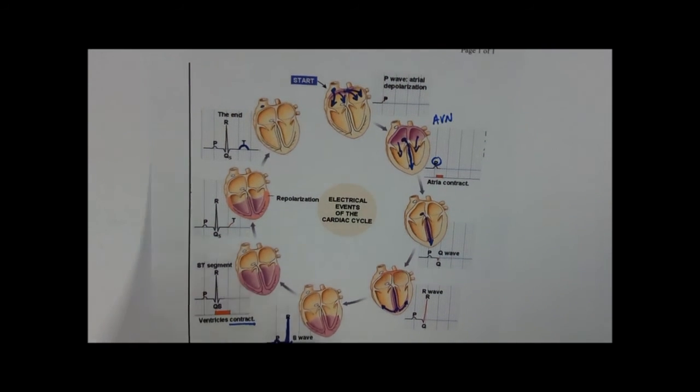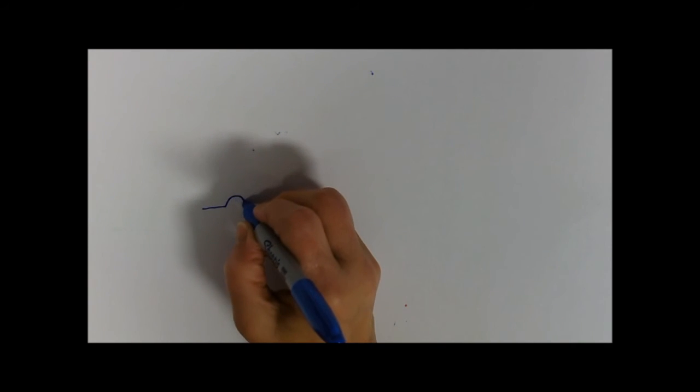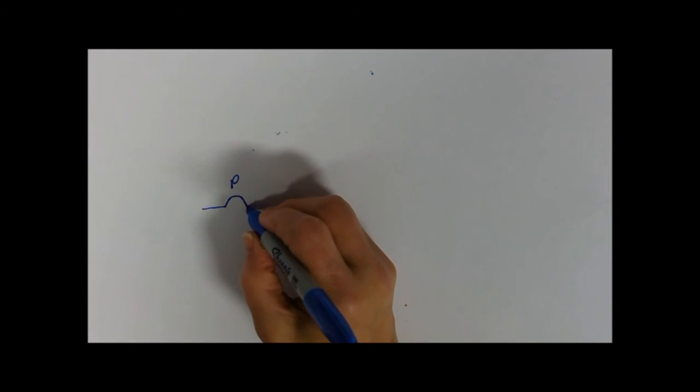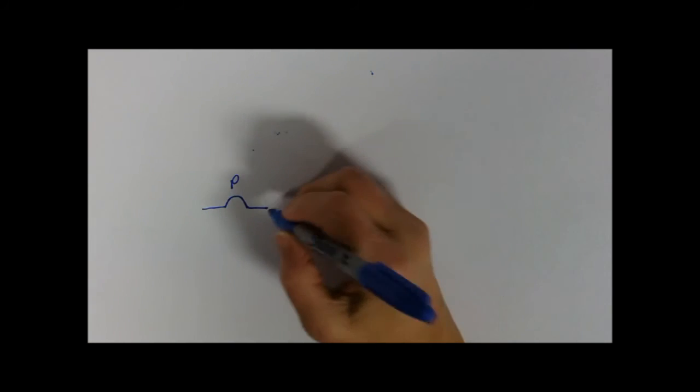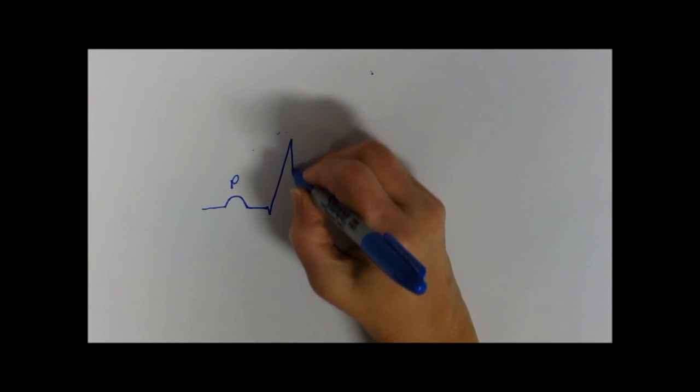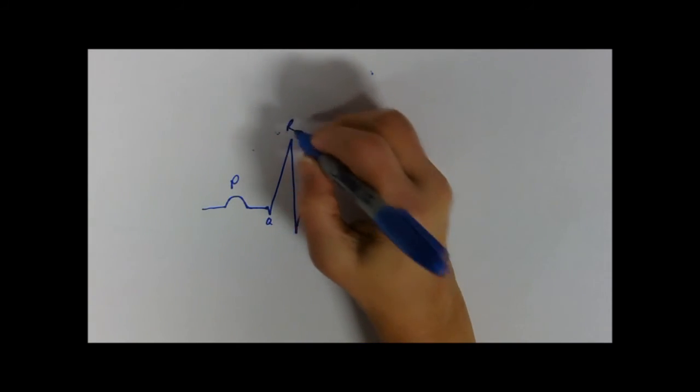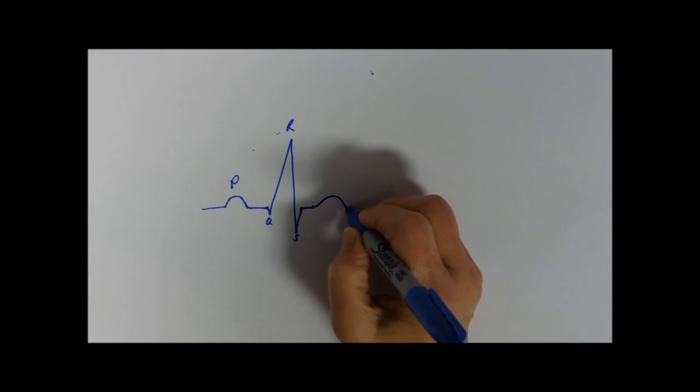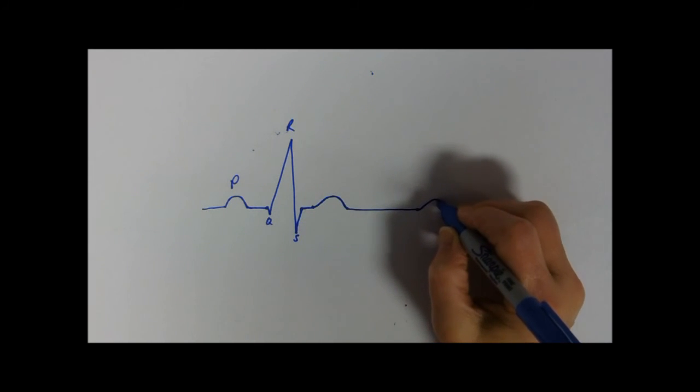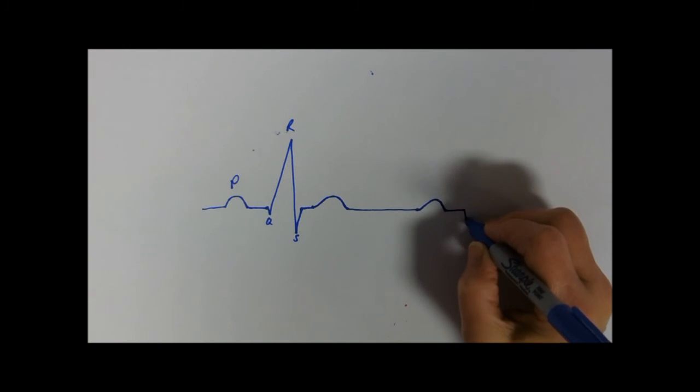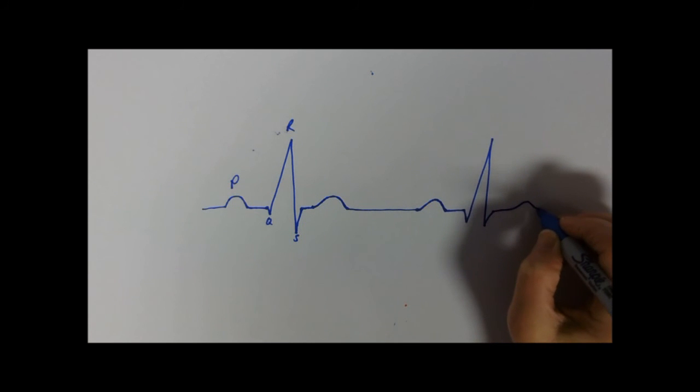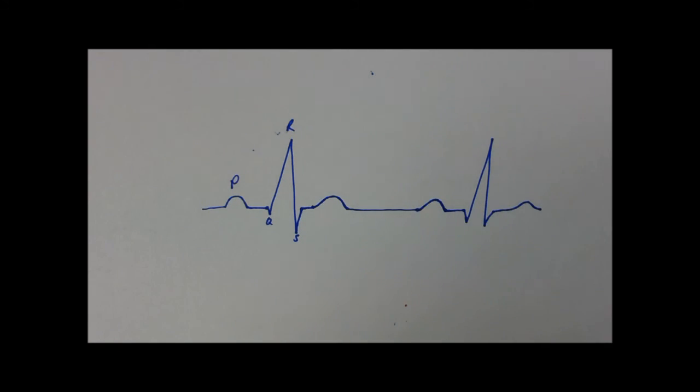So if we look at a whole ECG trace. There we go. So we've got P wave, atria depolarized, atrial systole. We've got a little gap there. We've got the QRS complex, massive as the ventricles. And then we've got the T wave at the end. Then there'll be a bit of a gap. And then we get the atrial depolarization, QRS, P, T. That's what a normal ECG trace looks like.